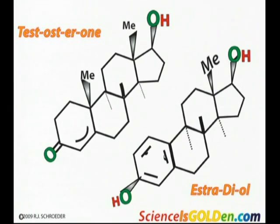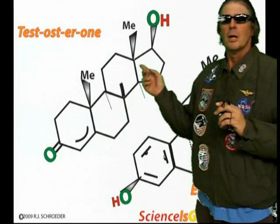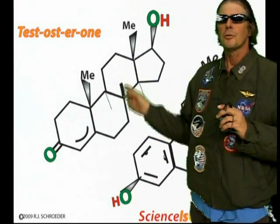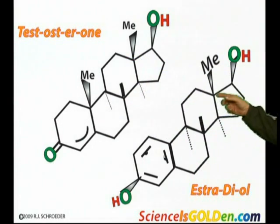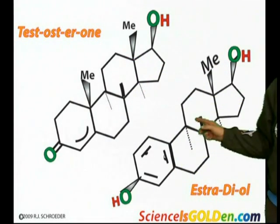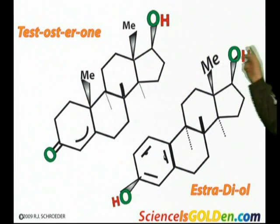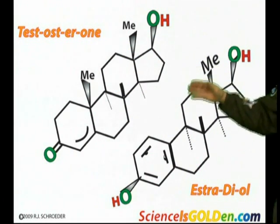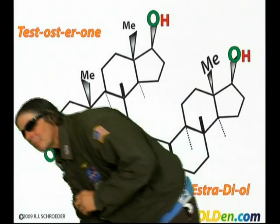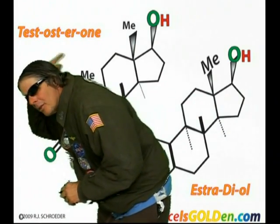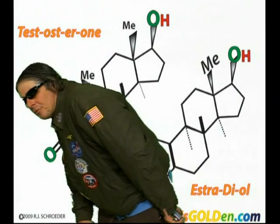Just to make it look cartoonish: testosterone — three six-membered rings with a five-membered ring on the outside. Estradiol — three six-membered rings with a five-membered ring on the outside. The OH and the methyl are still in the same place. So what's the difference?